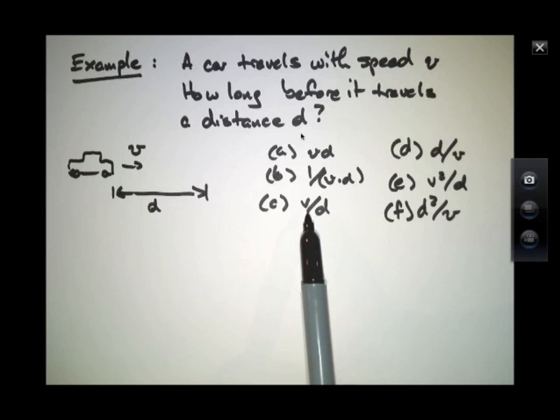Answer c would be a length over a time, divided by a d, a length, so that would be 1 over a time. That's close, but it has the inverse of what we want.